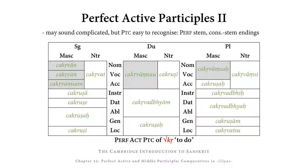Here is the paradigm of the perfect active participle of CR, meaning 'to do,' so 'having done.' Let's begin by looking at the weak cases, from the instrumental onwards. The strong cases are shaded. In the singular, we have CHAKRUSHA, CHAKRUSHA, CHAKRUSHAH, CHAKRUSHAH, CHAKRUSHAH, CHAKRUSHI, for both the masculine and the neuter.